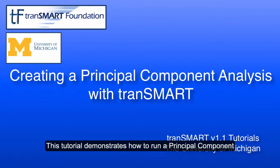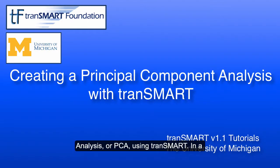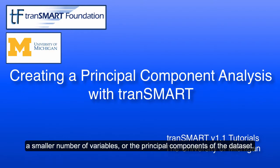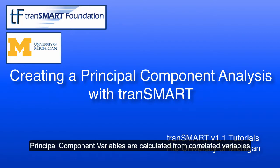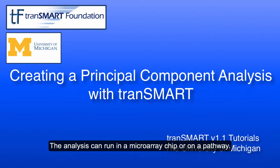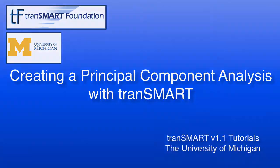This tutorial demonstrates how to run a Principal Component Analysis, or PCA, using Transmart. In a PCA, the total number of variables in the dataset is reduced to a smaller number of variables, or the principal components of the dataset. Principal component variables are calculated from correlated variables in the total dataset. The Principal Component Analysis is a workflow used to identify variants in a dataset. The analysis can run on a microarray chip or on a pathway.